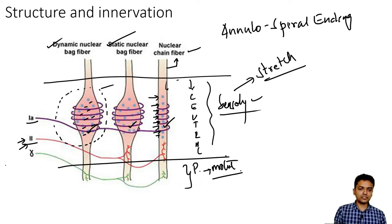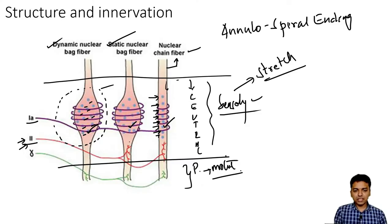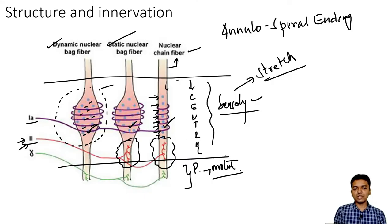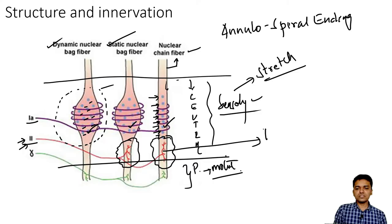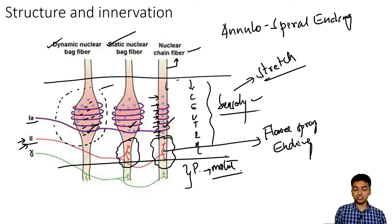The type 2 fibers are not innervating dynamic nuclear bag fibers — very important point. The type 2 fibers are innervating only the static nuclear bag fiber as well as the nuclear chain fiber. The way they end on the static nuclear bag fiber and the nuclear chain fiber is called as flower spray ending.